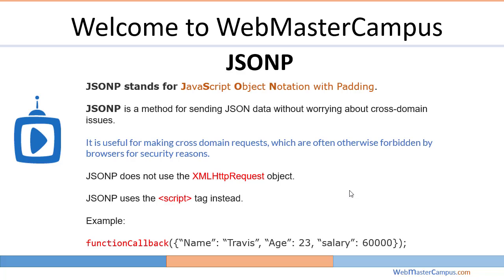Here is an example. You can see a function callback, and the same information which we were accessing using JSON can be accessed with the help of JSONP, but it will also give you a callback. Let's see an example to understand how it works.